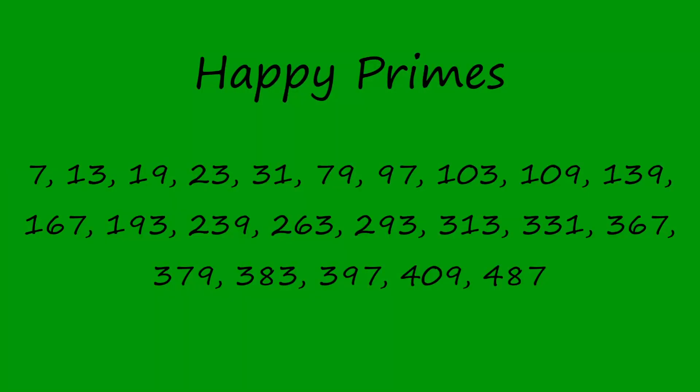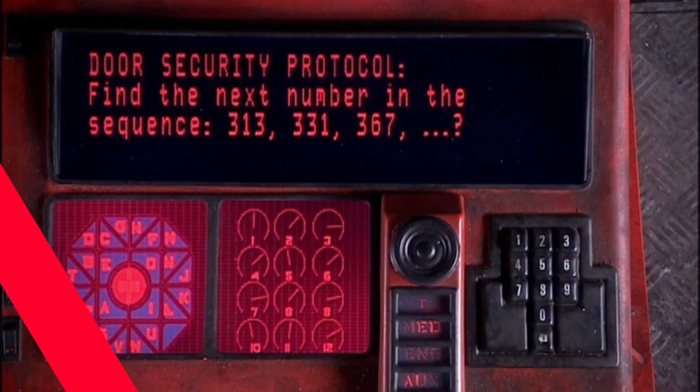By the way, a number that is both happy in base 10 and prime is called a happy prime, and these made an appearance in an episode of Doctor Who, where knowledge of them saved a ship from being eaten by a living star. Find the next number in the sequence,